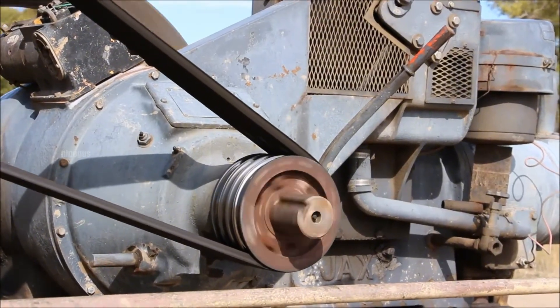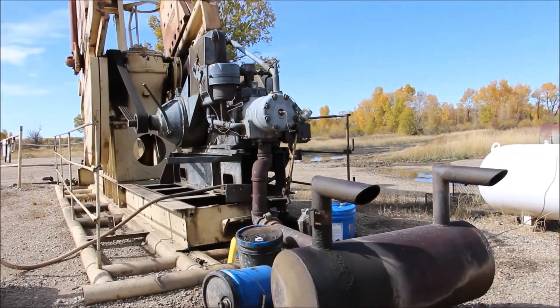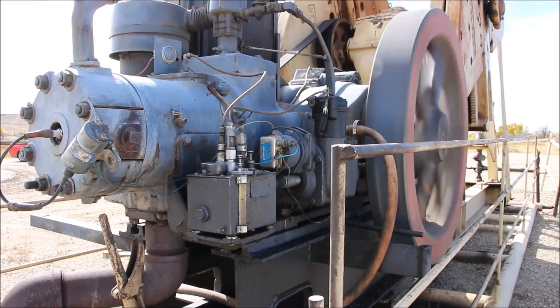From the gearbox, the power is transmitted to the main part of the machine, which is the walking beam and Pitman arm assembly. This mechanism converts rotational motion into an up and down reciprocating motion.